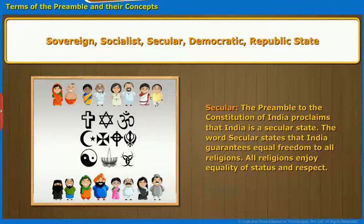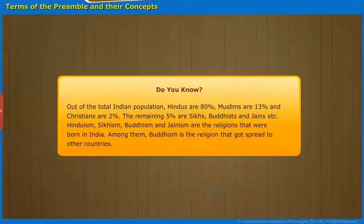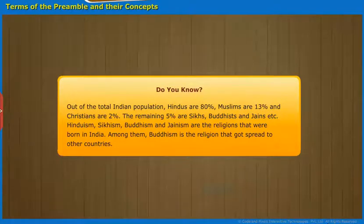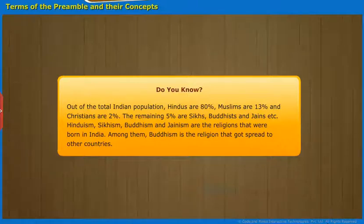The Preamble to the Constitution of India proclaims that India is a secular state. The word secular states that India guarantees equal freedom to all religions. All religions enjoy equality of status and respect. Out of the total Indian population, Hindus are 80%, Muslims are 13%, and Christians are 2%; the remaining 5% are Sikhs, Buddhists, and Jains, etc. Hinduism, Sikhism, Buddhism, and Jainism are the religions that were born in India. Among them, Buddhism is the religion that God spread to other countries.